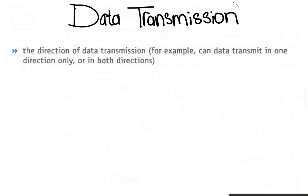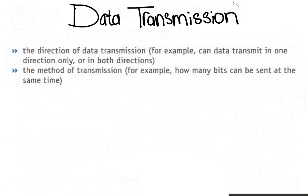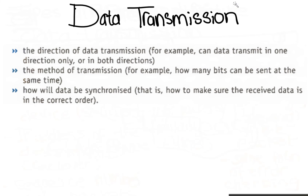The direction of data transmission — for example, can data transmit in one direction only or in both directions. The method of transmission — for example, how many bits can be sent at the same time. How will data be synchronized? That is, how to make sure the received data is in the correct order. These factors are usually considered by a communication protocol.